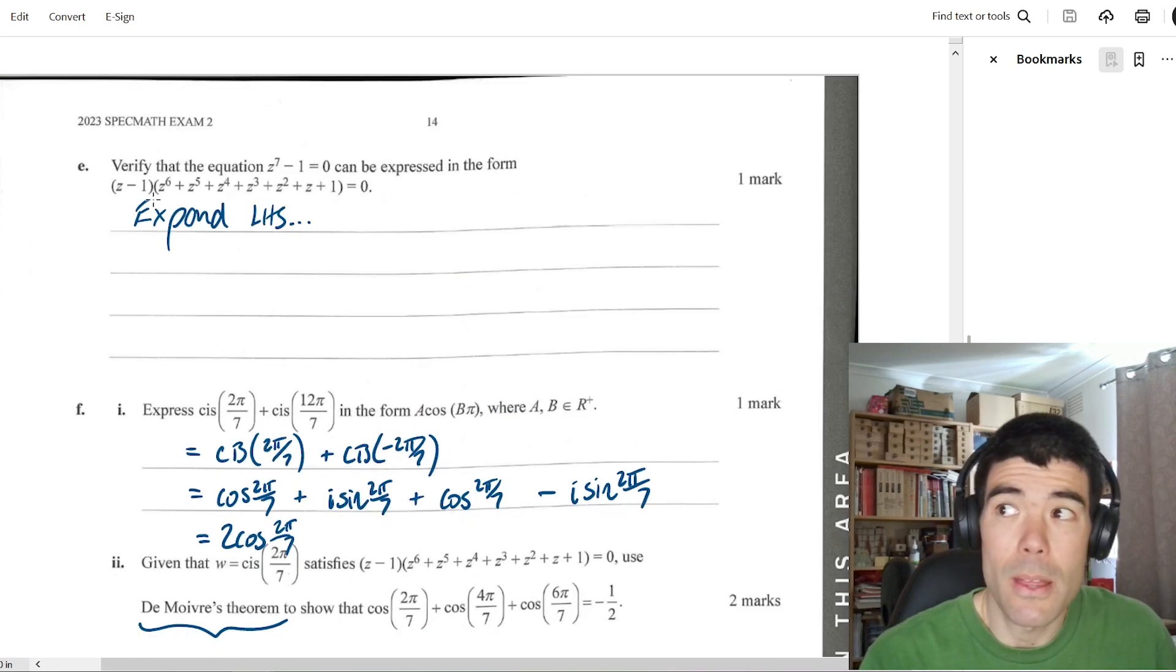Part E, verify this can be expressed in this form. So verify there's two ways we go, I guess. One is we could factorize this and then use a long division. Well, that's going to take a long time. I think easier is to verify by expanding this and show that we get back to z to the 7 minus 1. And that is going to take less time. I still didn't actually show the working, but just expanding, you probably get like 14 terms there and most of them will cancel.